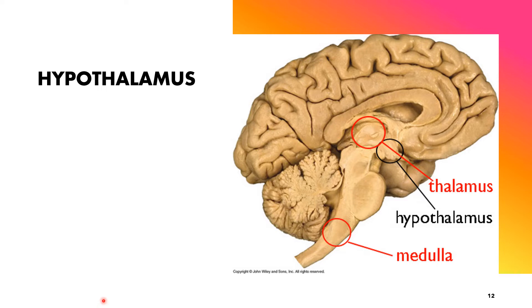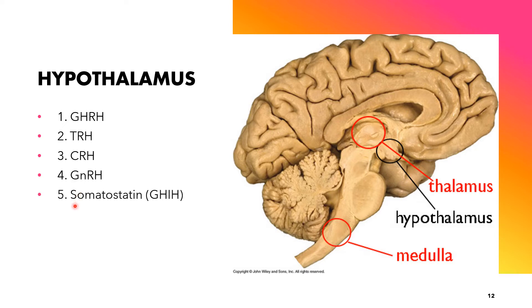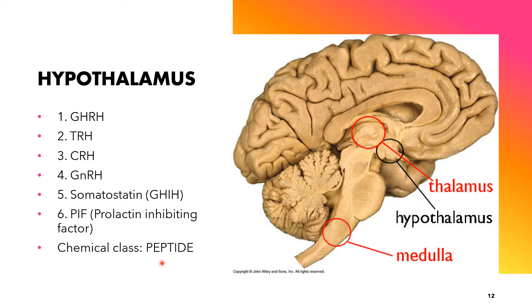The hormones produced and secreted by the hypothalamus include: growth hormone-releasing hormone (GHRH), thyrotropin-releasing hormone (TRH), corticotropin-releasing hormone (CRH), gonadotropin-releasing hormone (GnRH), growth hormone-inhibiting hormone or somatostatin, and the prolactin-inhibiting factor (PIF). In terms of chemical class, the hypothalamic hormones are considered to be peptide hormones.